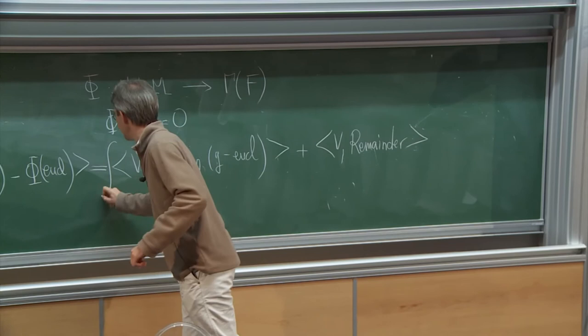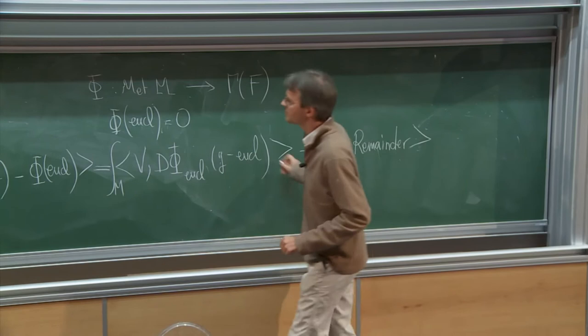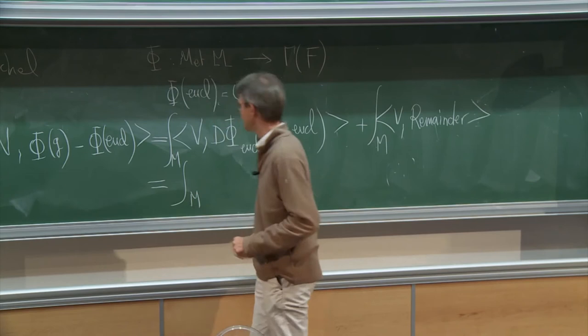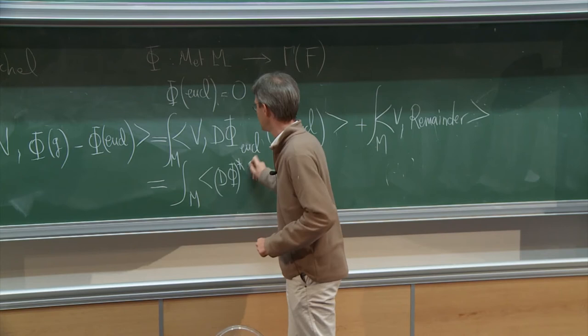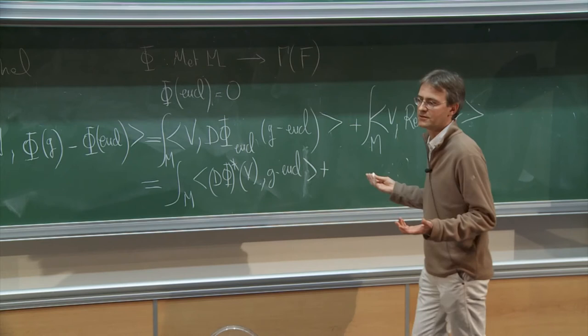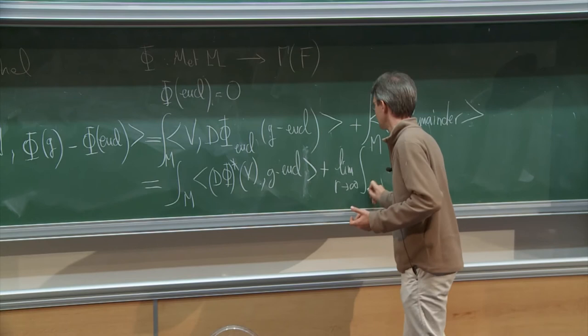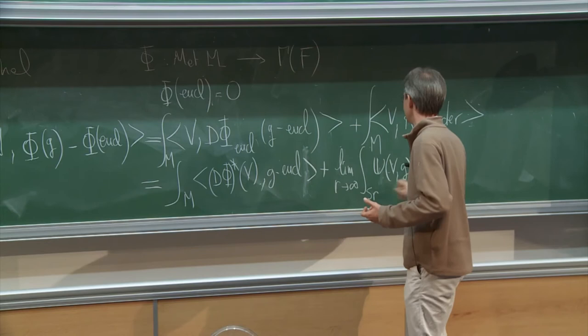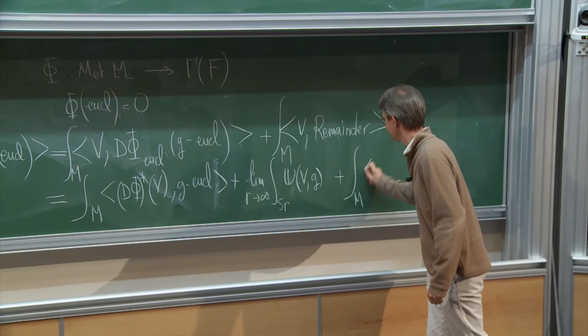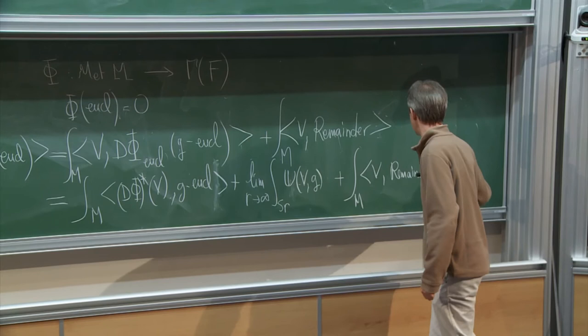And, of course, you integrate. And then, you integrate by parts here, on this part of the formula. And what you get is, here, you get the adjoint term, the one you expect. So that's v phi star of v against g minus Euclidean metric, plus something which is a boundary contribution. Something which I call, let's say, u of v and g. It depends on phi. Yes. Just finishing here. Yes. And then, the remainder. Okay. So that's the main formula.